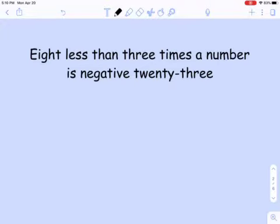Let's look at this right here. It says eight less than three times a number is negative 23. There's a lot in there and we're going to unpack that in a few minutes. You're going to get something like this and they're going to be like write an equation.